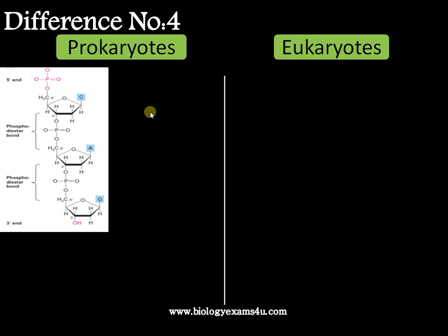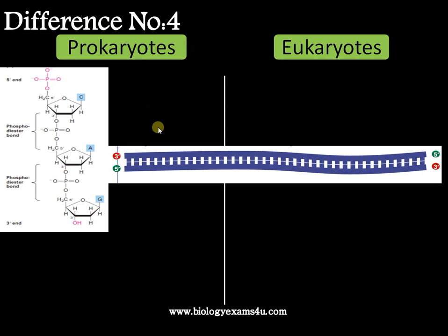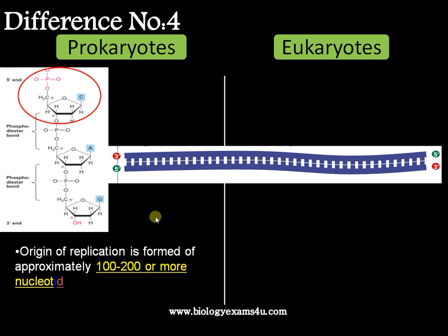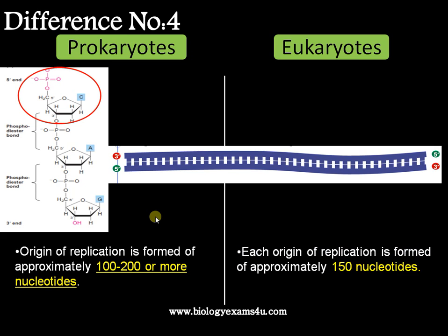Difference number four is regarding the number of nucleotides in the ORI. In the case of prokaryotes, the ORI is formed of approximately 100 to 200 or more nucleotides, whereas in the case of eukaryotes, each ORI is formed of approximately 150 nucleotides.